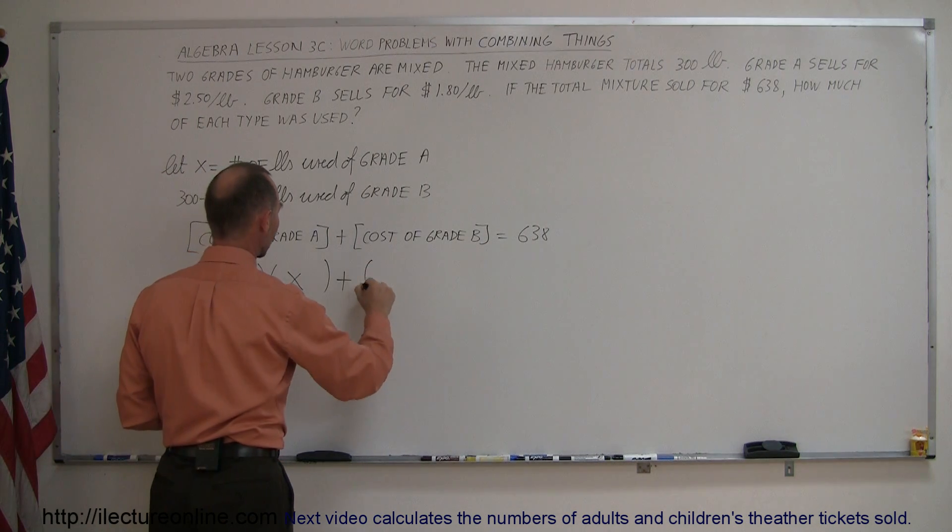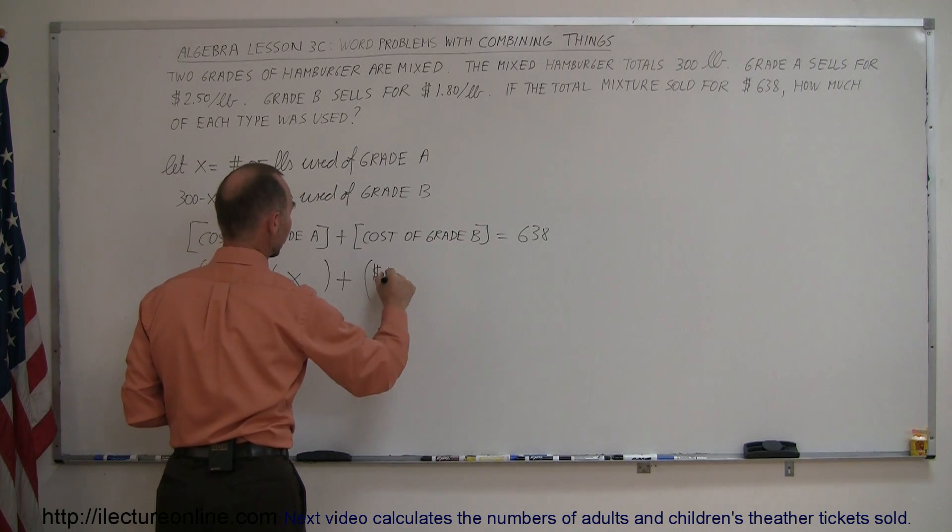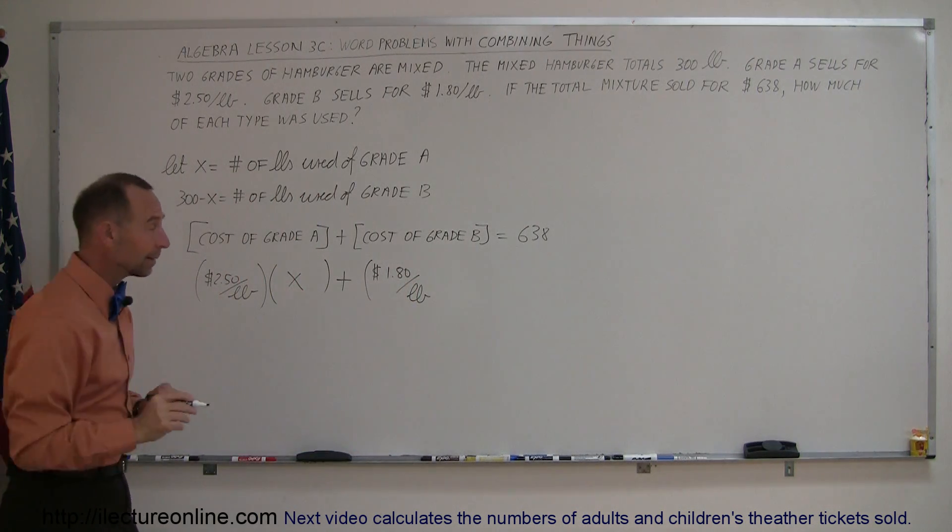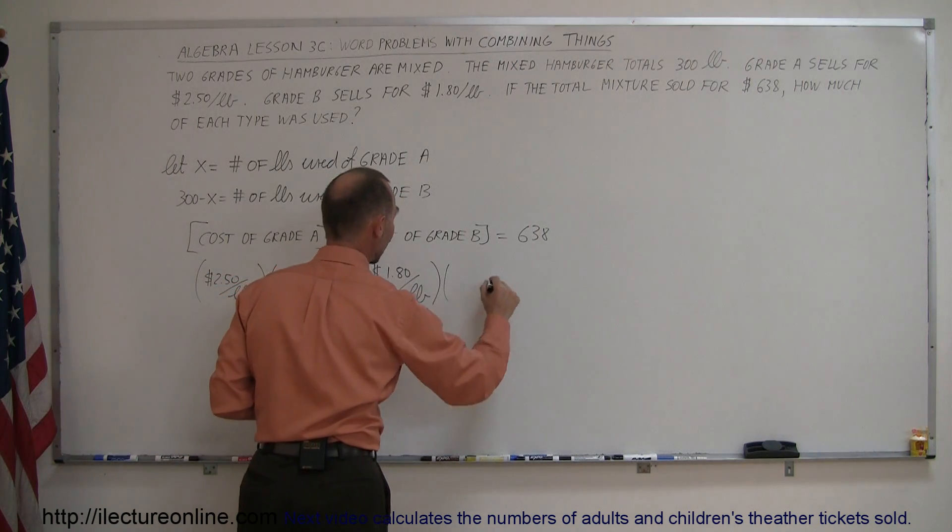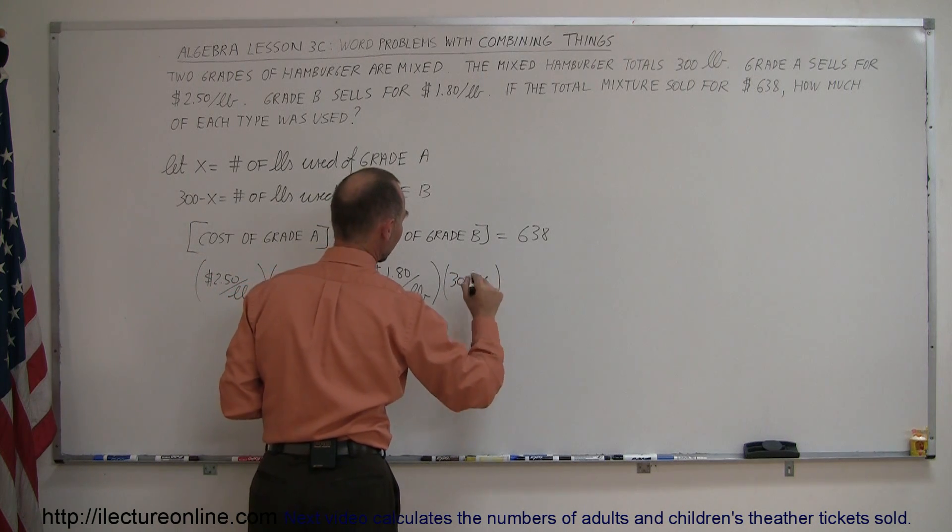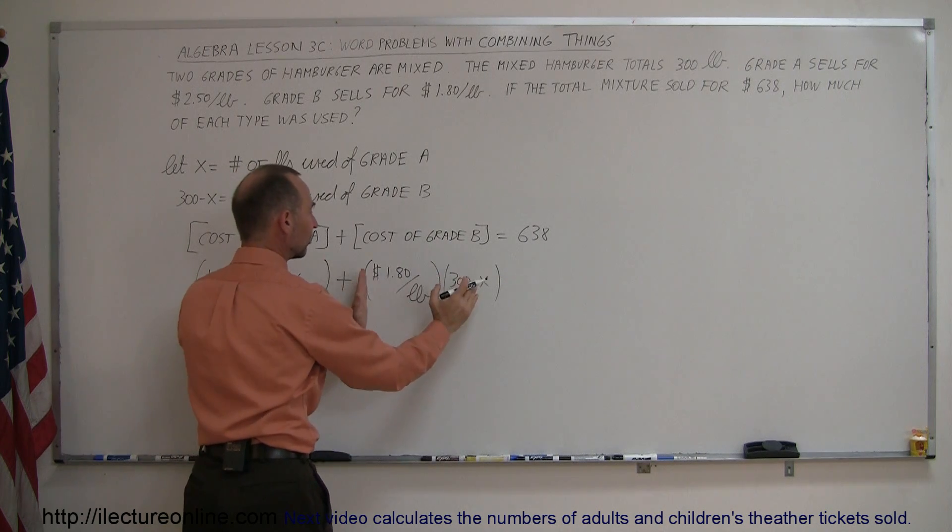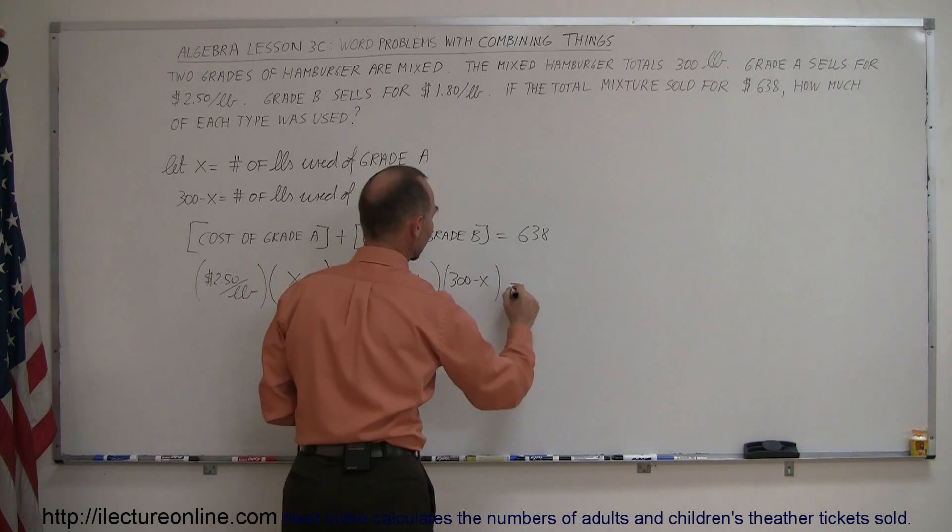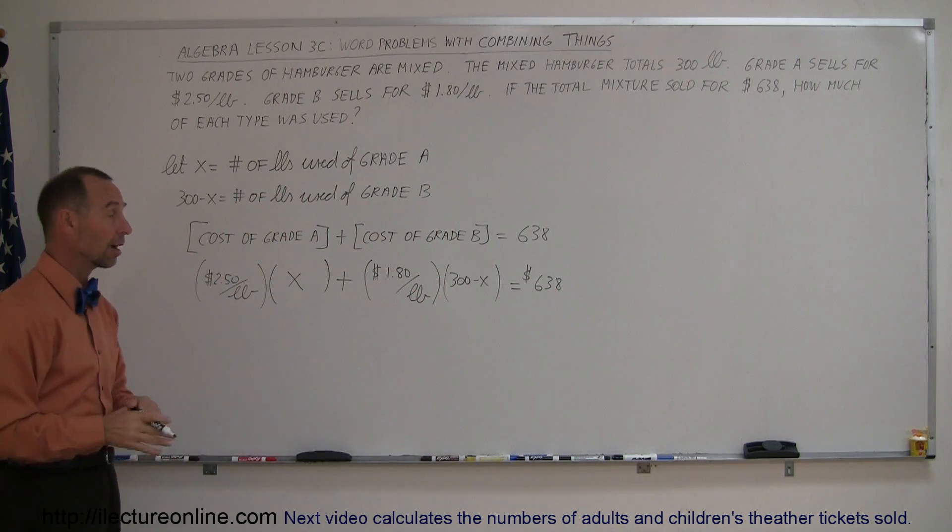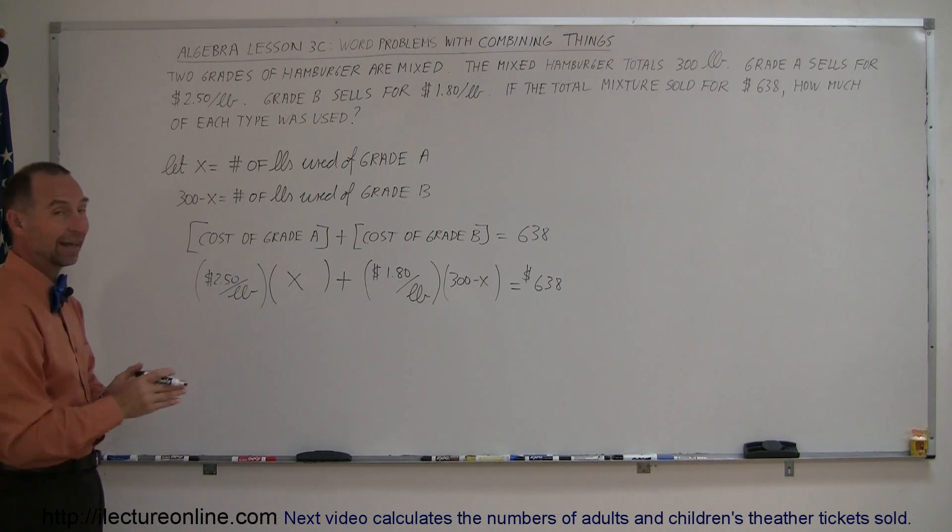Plus, what is the cost for grade B hamburger? It's $1.80 a pound, so $1.80 a pound, and we multiply that times the number of pounds that we have of grade B hamburger. And here it says 300 minus X, so we use 300 minus X times the cost per pound for grade B. That gives us the total cost for grade B, and that adds up to $638. We can put in the dollar sign there, but it's probably cleaner just to leave it off. We just work with the numbers and see what we get.